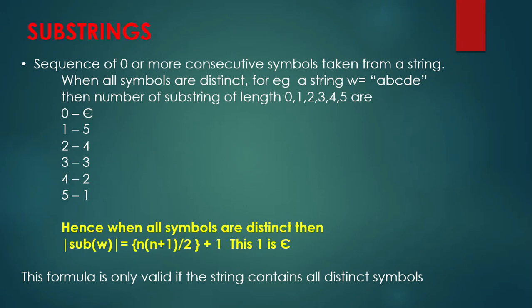The next terminology is substrings. A substring is a sequence of zero or more consecutive symbols taken from a string. Substrings are sub-portions of a string. For example, for string ABCDE: A is a substring, ABC is a substring, BCD is a substring, CDE is a substring. Zero length substring is epsilon, which is always included. One length substrings are A, B, C, D, E — five symbols.